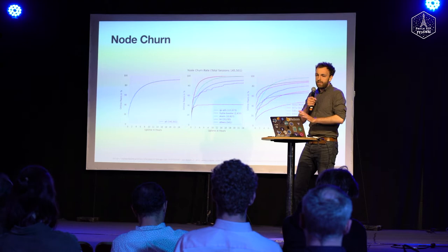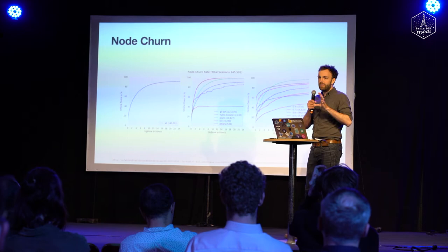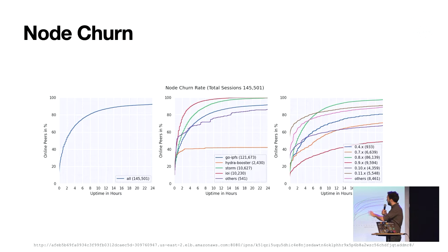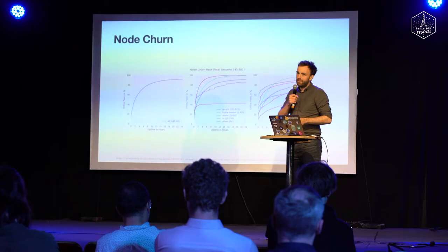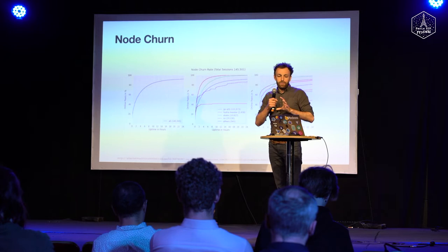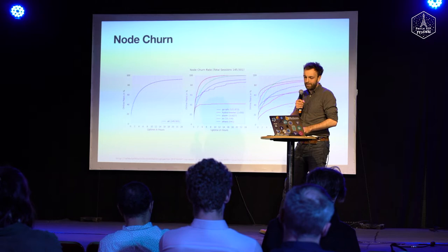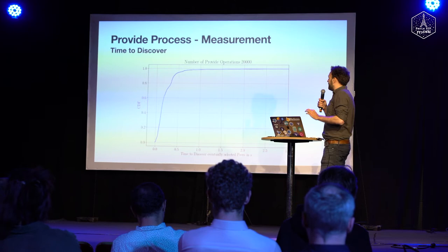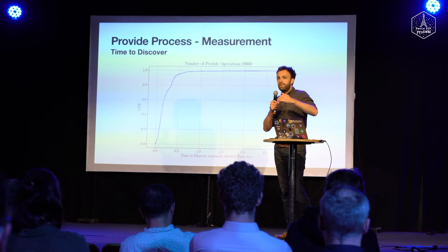There are a couple of reasons why that's the case. One of the most important is node churn: we get results from remote peers' routing tables, and those entries could be stale because nodes churn in the network. The left graph shows uptime in hours versus the percentage of peers that stay that long in the network. After two hours, almost 50% of peers that joined have already left. Kademlia favors stable nodes, but we will definitely get stale records from remote peers during the lookup process, slowing down the whole provide operation.